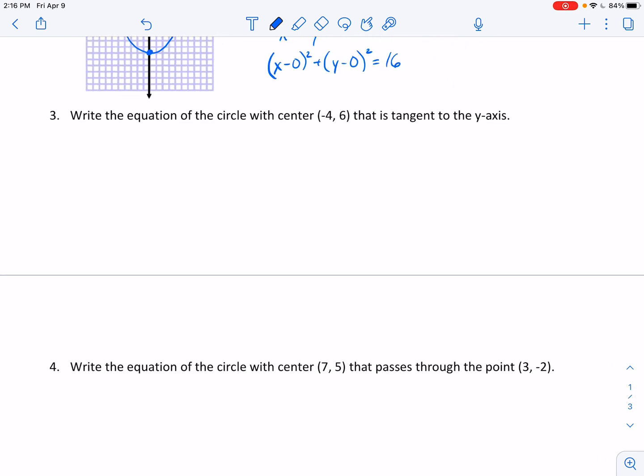The next one gets a little bit more interesting. Write the equation of the circle with center negative 4, 6 that is tangent to the y-axis. So what I want to do is just think about, okay, negative 4, positive 6. So I'm going to, that's my center. And it's tangent to the y-axis.